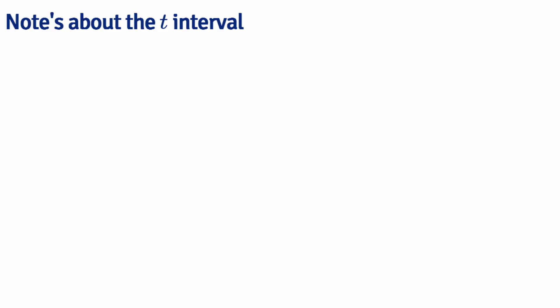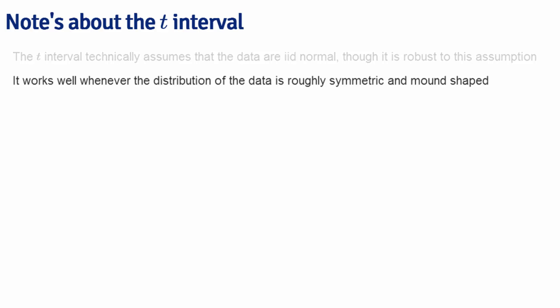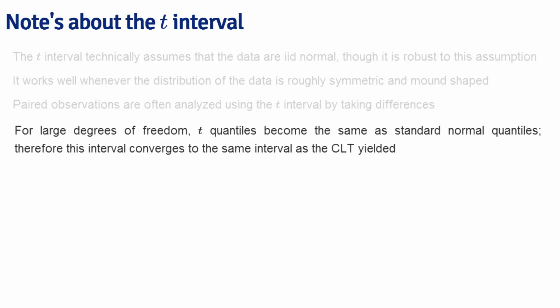Let's go through a couple of notes about the t-interval. The t-interval technically assumes that the data are IID normal, though it's very robust to this assumption. Basically whenever the distribution is roughly symmetric and mound-shaped, the t-interval will work fairly well. If you have paired observations — for example when you measure the same unit twice — you can use the t-interval to analyze this kind of data by taking differences or differences on the log scale. For large degrees of freedom, the t-quantiles become exactly like those of the standard normal, so the t-interval converges to the normal interval — the same one you would obtain with the central limit theorem.